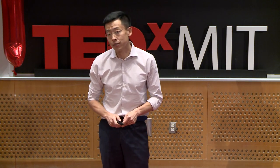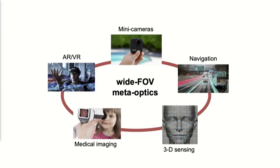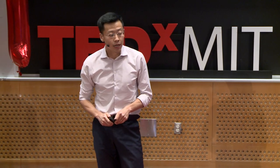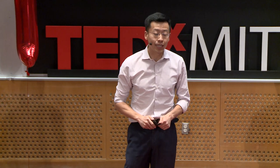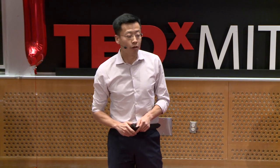We can fabricate these metasurfaces using processes compatible with silicon CMOS processes, so potentially we can manufacture these meta-optics in large volume and at low cost. Leveraging the high performance and ultra-compactness of these meta-optics, we can readily transform an array of high-impact applications — dramatically shrinking the size of cameras on consumer electronics, integrating meta-optics into AR and VR headsets, building compact 3D optical sensors for automotive and industrial automation, and enabling ultra-compact, portable, high-performance medical imaging devices.